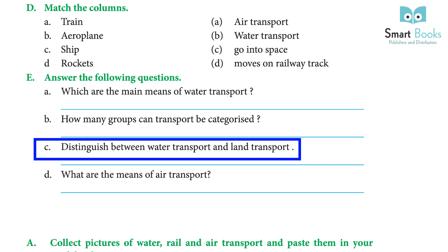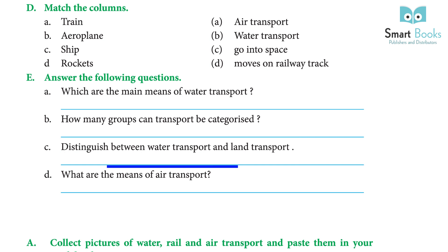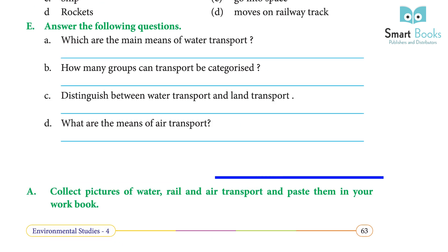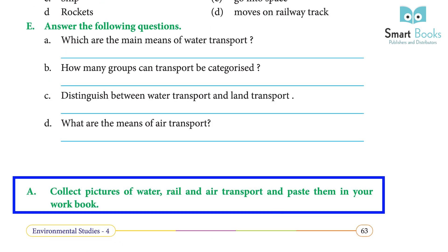(d) What are the means of air transport? Answer: Aeroplanes and helicopters are the fastest means of air transport. Activity: Collect pictures of water, rail, and air transport and paste them in your workbook.